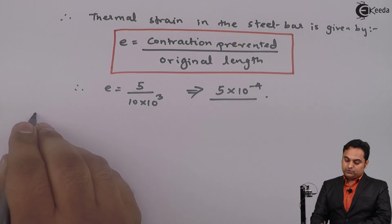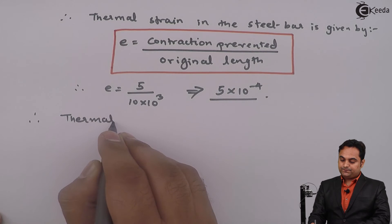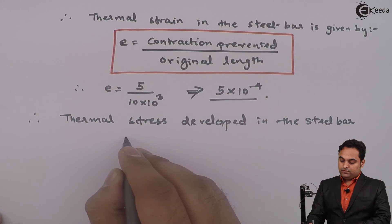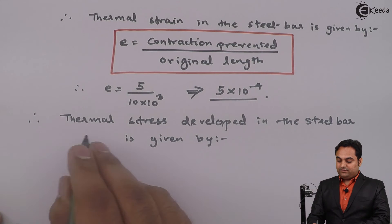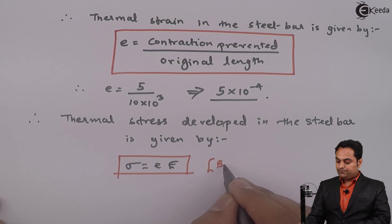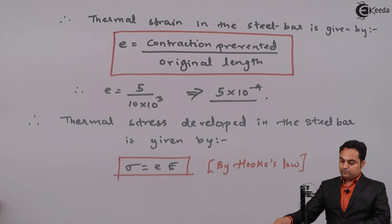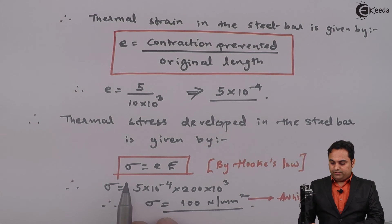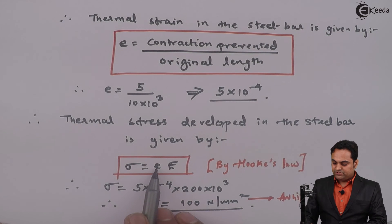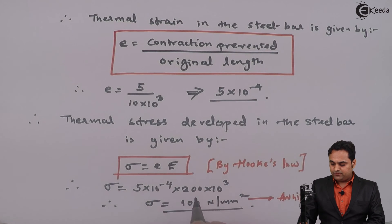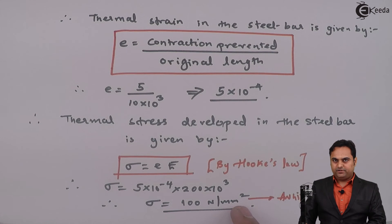After getting the thermal strain, we calculate the value of thermal stress. Thermal stress developed in the steel bar is given by thermal strain into Young's modulus. Stress equals strain into Young's modulus by Hooke's law. The thermal strain is 5 into 10 raised to minus 4, and Young's modulus is 200 into 10 raised to 3. Multiplying these, the value of thermal stress comes out to be 100 N per mm square.